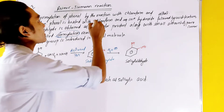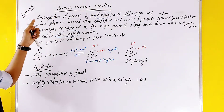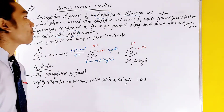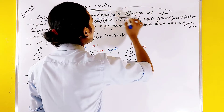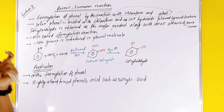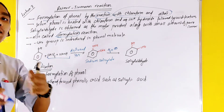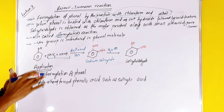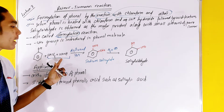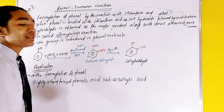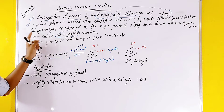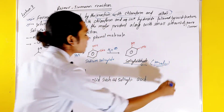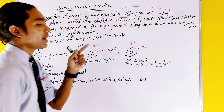Formylation of phenol — the reaction of phenol with chloroform and alkali. When phenol is heated with chloroform in an aqueous solution of sodium hydroxide, followed by acidification, salicylaldehyde is obtained as a major product.